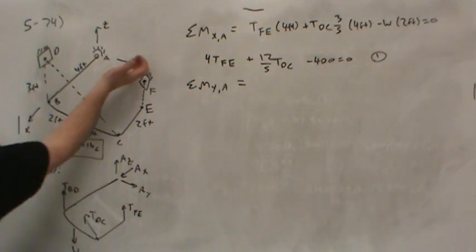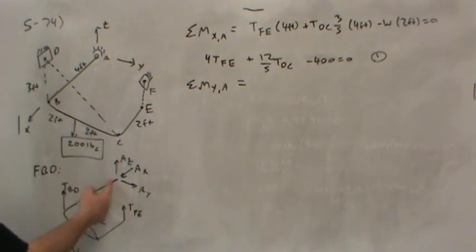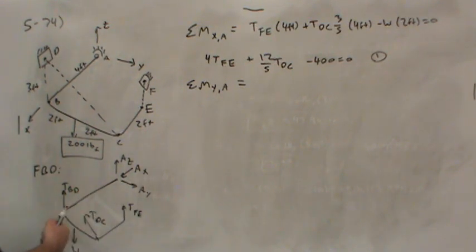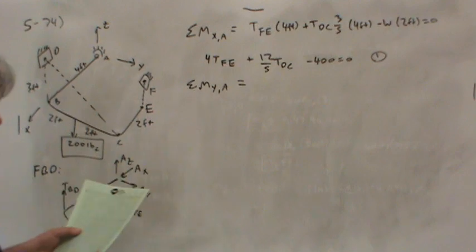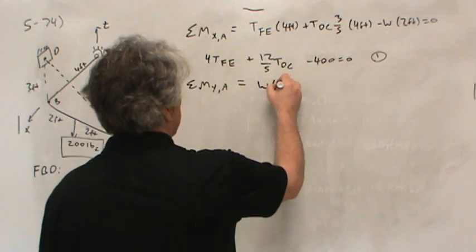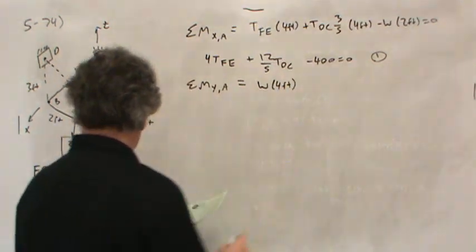If I sum moments about the Y axis at A, well that's about this axis. Now of course all of these forces pass through that point, no moment, but now I'm going to have one, two, three, four terms because look, each one of these has a piece in the vertical direction and causes a moment about the Y axis because there's an X arm axis for each. So let's start off with the weight for example. The weight times four foot is one of the pieces because think about it, the weight is going to cause a moment about the Y axis in the positive sense, whereas all three of these others will be in the negative sense.